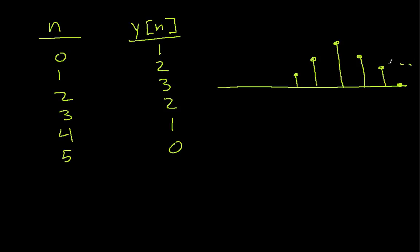So our Y of N looks like this. And this is periodic, so I can keep drawing this pattern over and over and over. I'm not going to. And for the example we did, this was 0, 1, 2, 3, 4, 5.